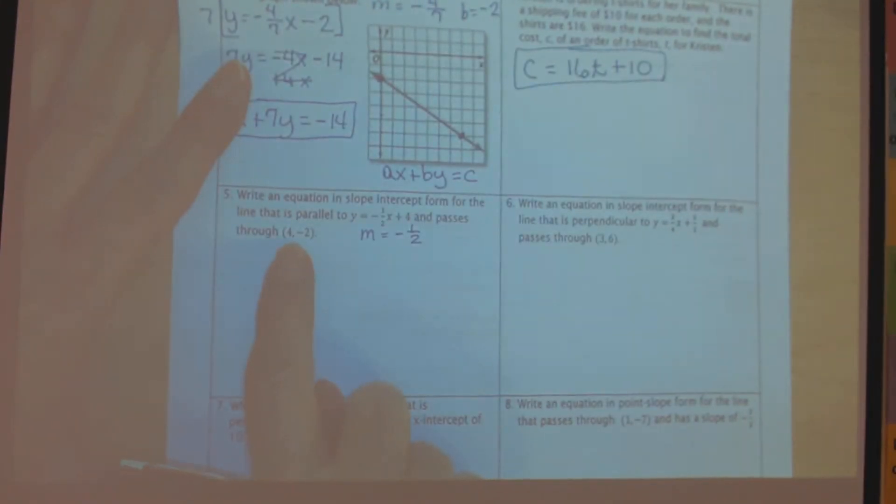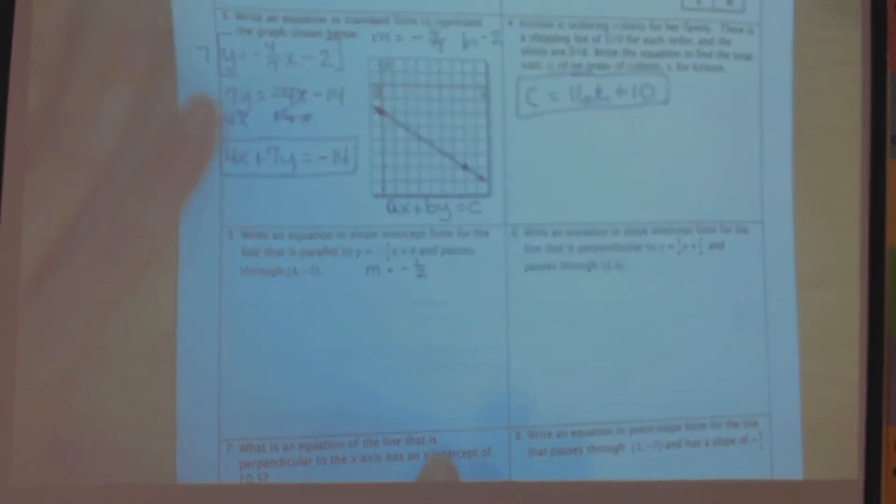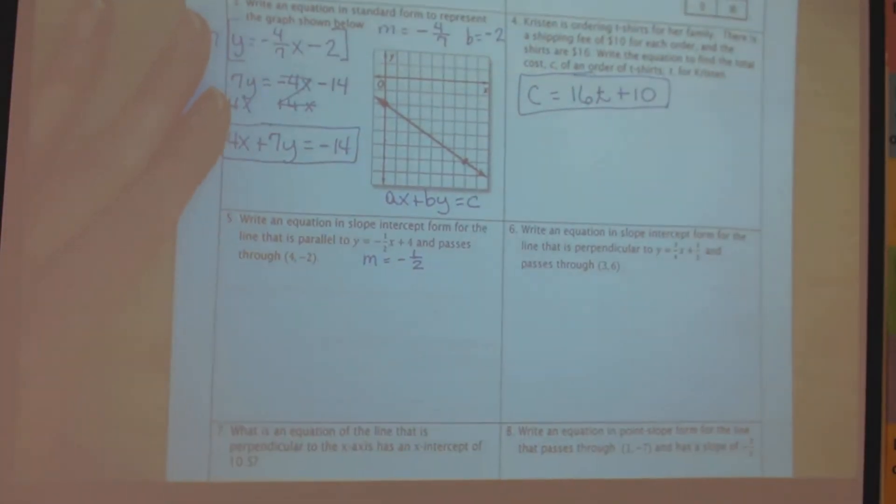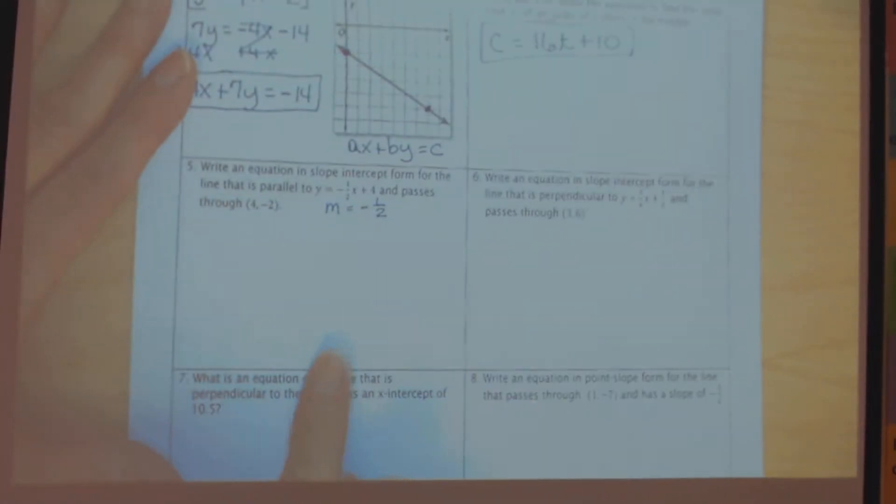It also is going to pass through the point 4, negative 2. So we can go ahead and use the same process that we did for problem number 1, or we can use the point-slope formula and solve for y. So I'm going to go ahead and use the point-slope formula in this one, so that you've got an example of both using the table and of what happens when you use point-slope form.